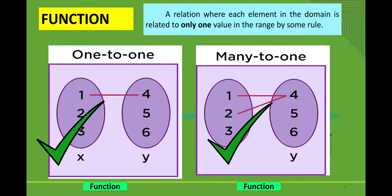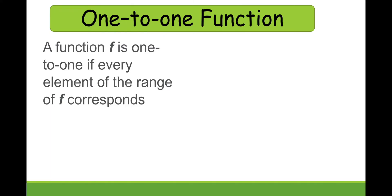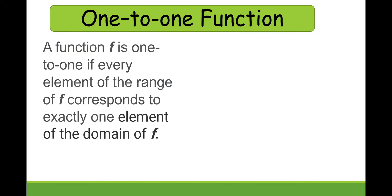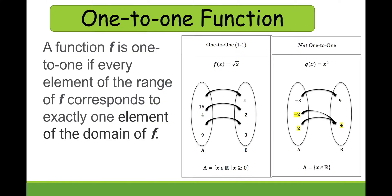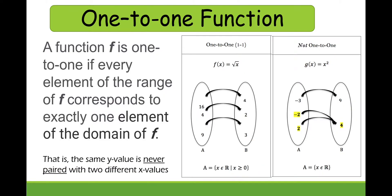Since one-to-one is a function, what is a one-to-one function? A function is one-to-one if every element of the range of f corresponds to exactly one element of the domain of f. For example, f(x) = √x is a one-to-one function, because every element in the domain corresponds to one element in the range. While g(x) = x² is not a one-to-one function, because an element in the range corresponds to more than one element in the domain. That is, the same y value should never be paired with two different x values.